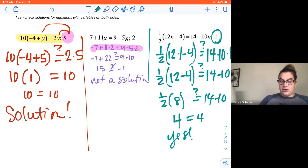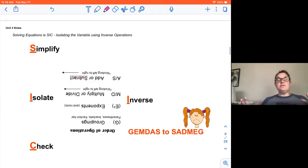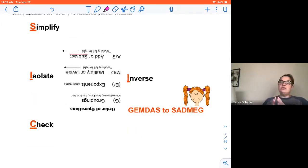So we need you to be using those checks. That's a great way for you to be able to know if you're right. Again, all we need to see on your paper is that first line in each of these cases. That's it. We're not asking you to show all those steps. So here we go. We are going to be solving equations. And a reminder that solving equations is sick. We simplify, we isolate, and we check. We reverse the order of operations. We go from GEMDAS to SADMEG, right?